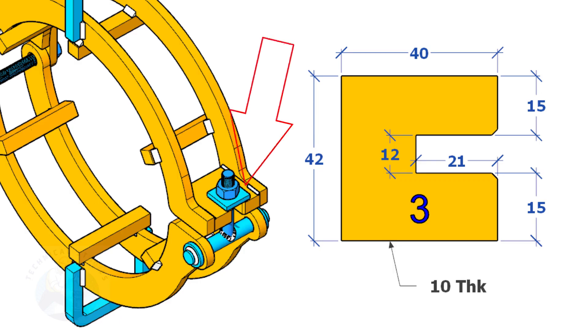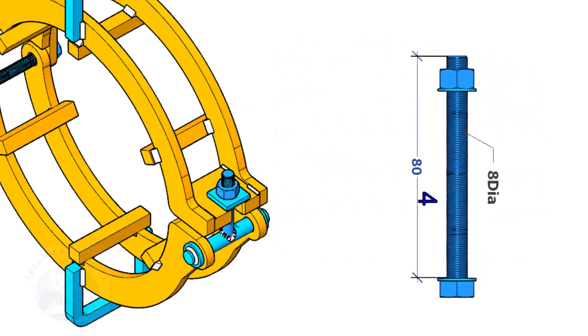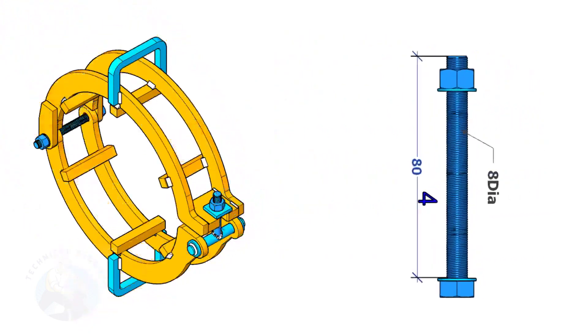Item number three sits here. Item number four is a bolt. You can use a stud bolt, or a round bar of the same size with stoppers tack welded on both ends of the rod after full assembly.